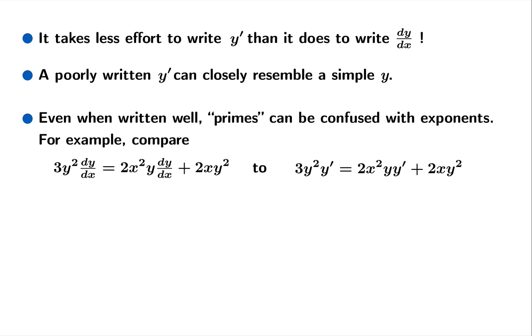And even when you write your primes well, sometimes that space gets confused with exponents. So here's an equation written both with Leibniz notation and Lagrange notation. Maybe it's more a matter of personal choice which one you'd want to use. But I tend to favor the one on the left even though it represents more work to write.